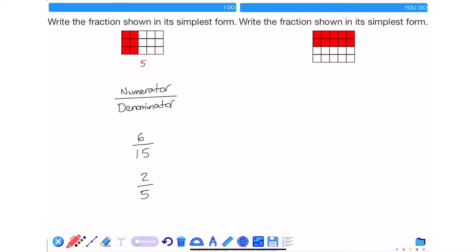These two fractions are equivalent and in order to simplify 6 fifteenths into 2 fifths you find the highest common factor of both the numerator and the denominator. The highest common factor of 6 and 15 is 3, so if I divide both the denominator and the numerator by 3 I get it into its simplest form.